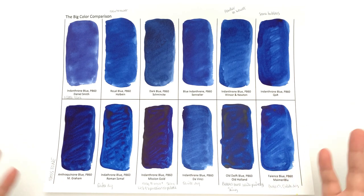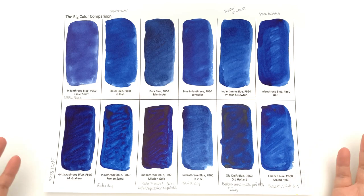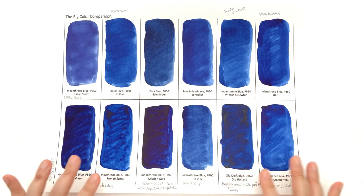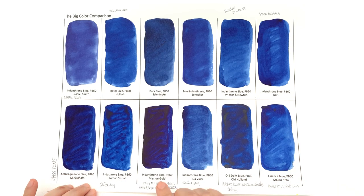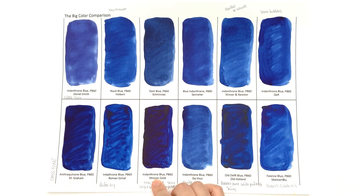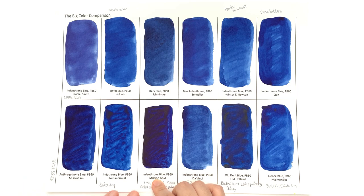In terms of streakiness of painting a swatch, I would say that the bottom row went down pretty badly. The Mission Gold one is terrible - it's shiny as well as really streaky.